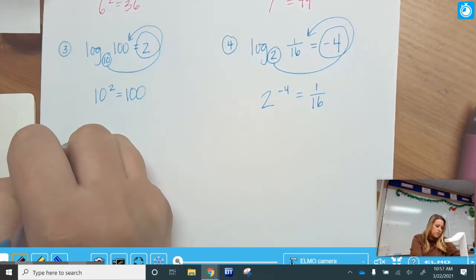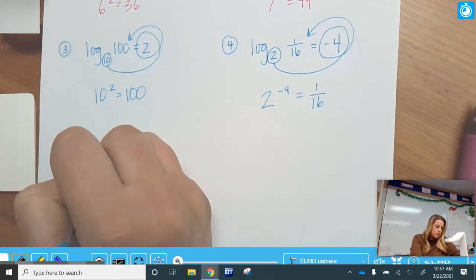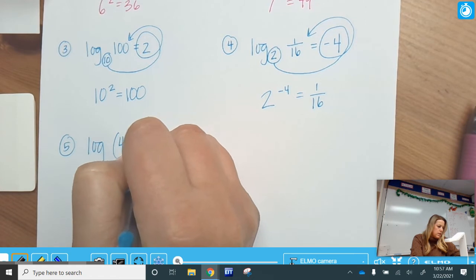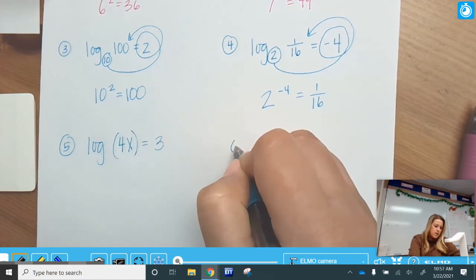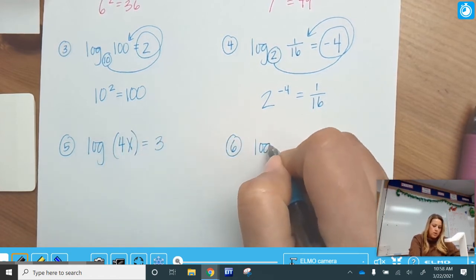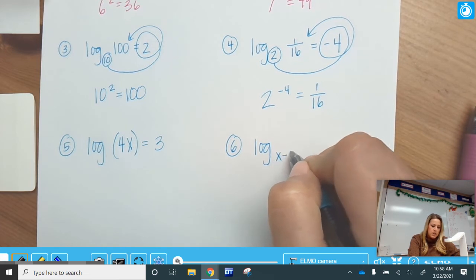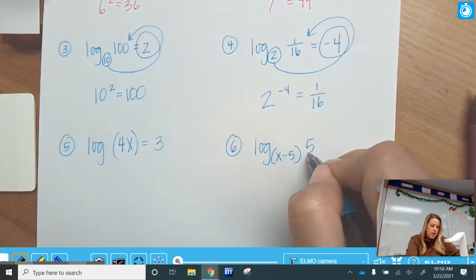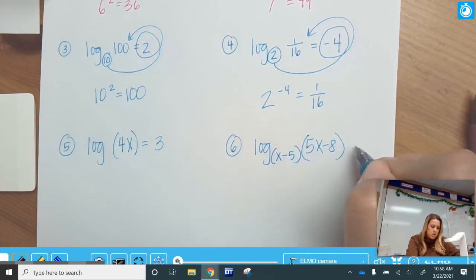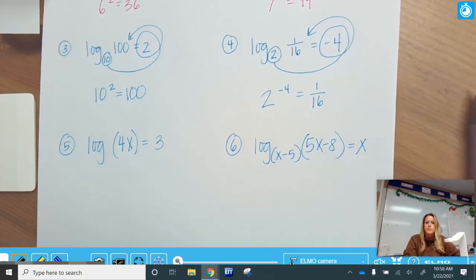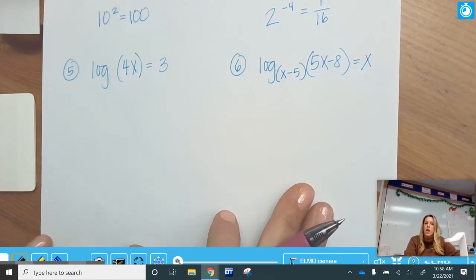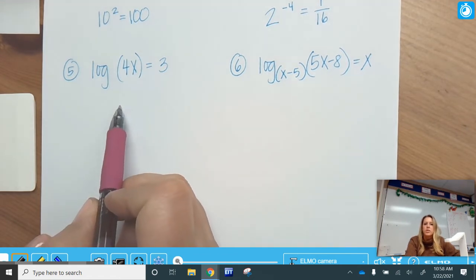Okay, all right, let's move to the last two. Log of 4x equals 3, and then 6 is log, we're going to get fancy here. Our base is going to be an expression, and then we're going to have another expression and an x. So pause if you need to write those things down. I'm going to go ahead and move on to actually converting.